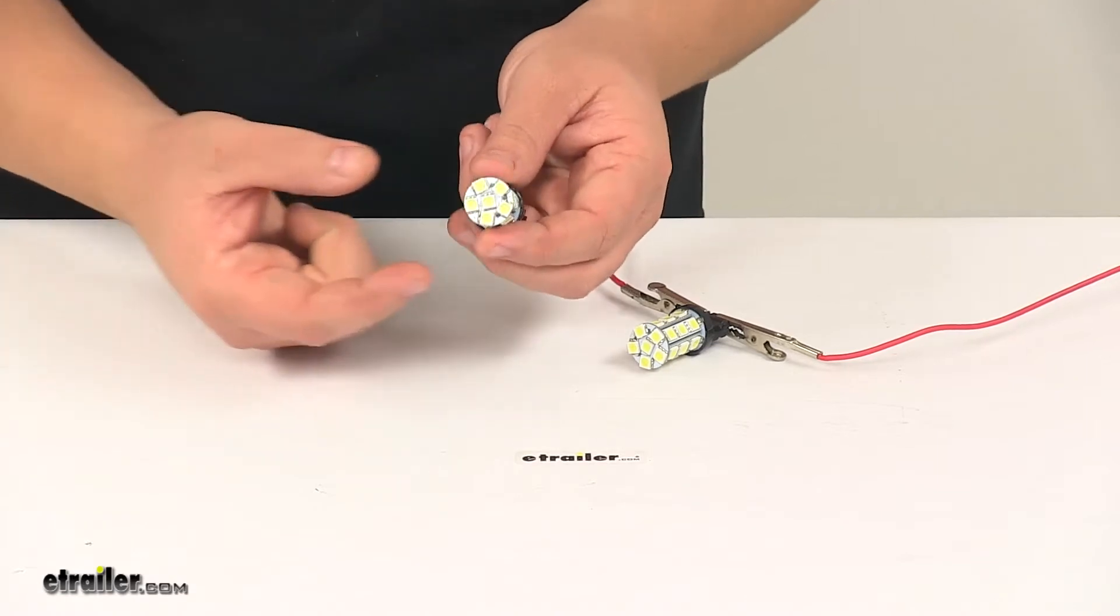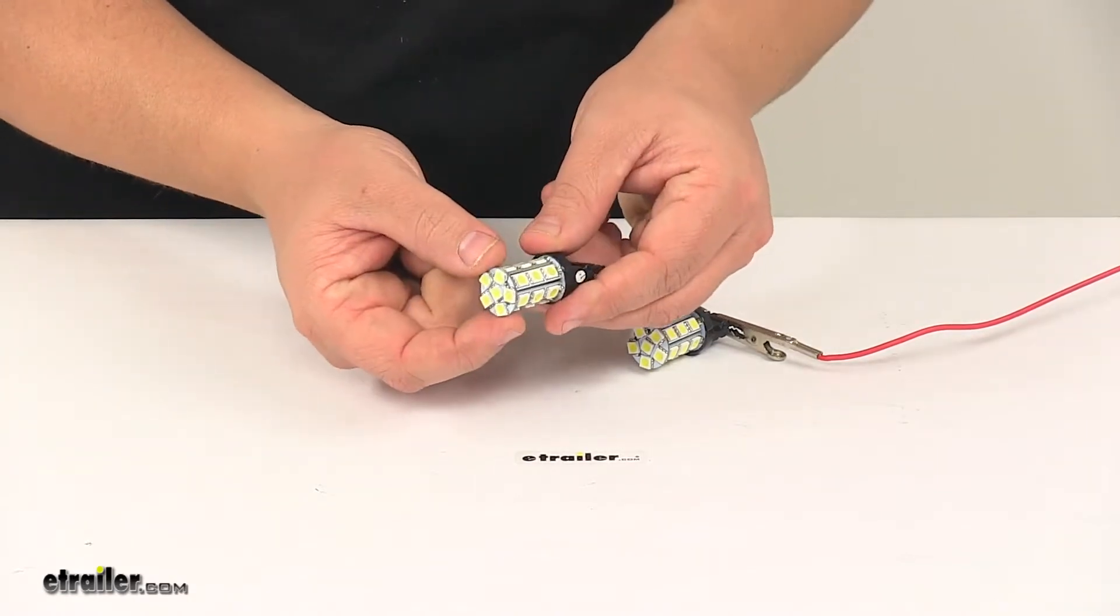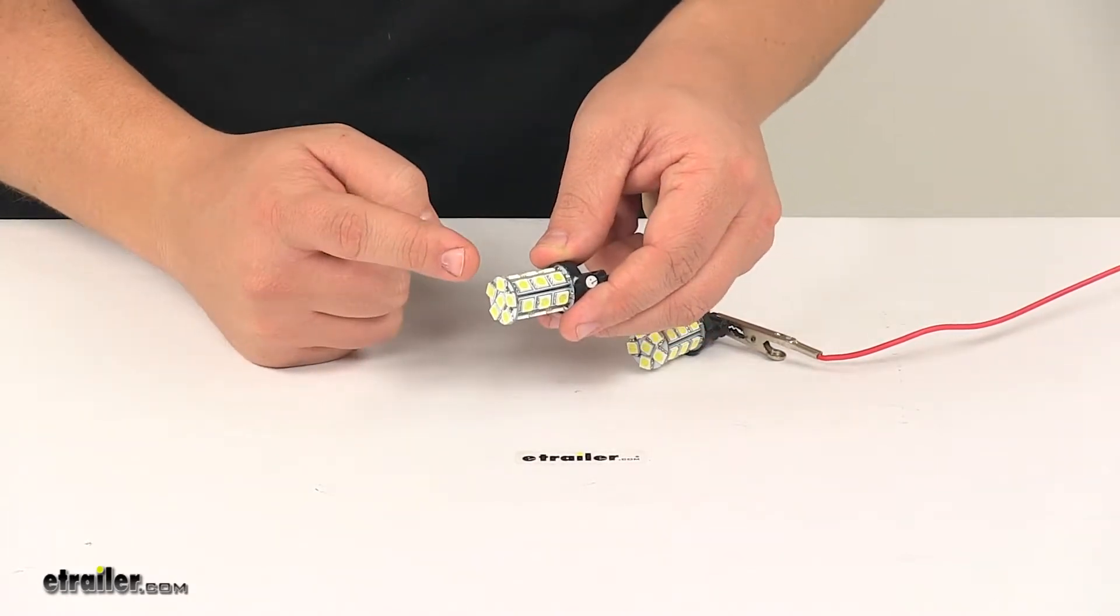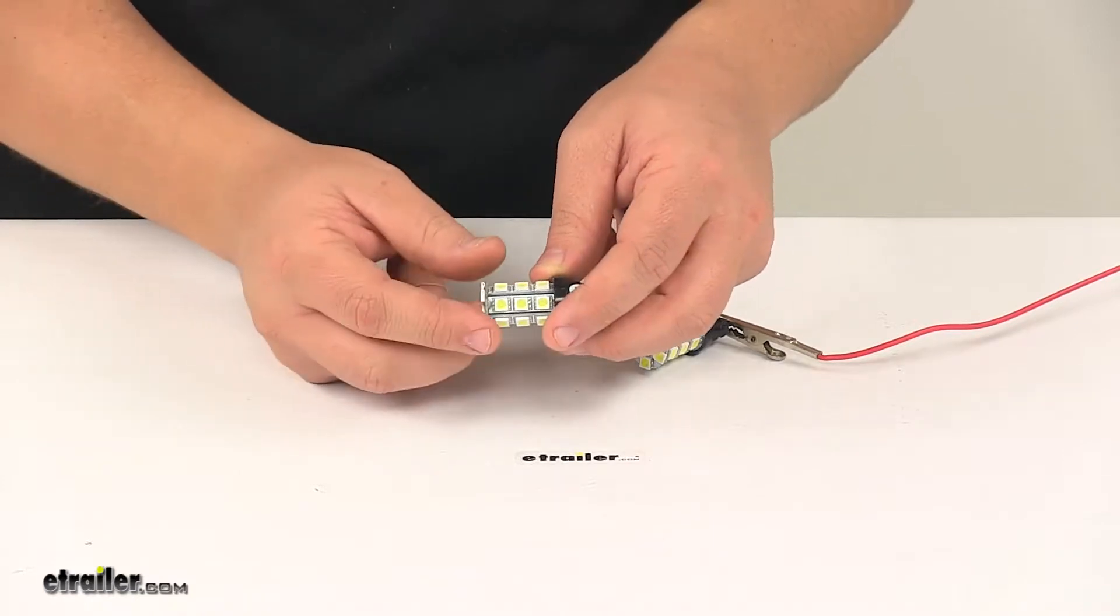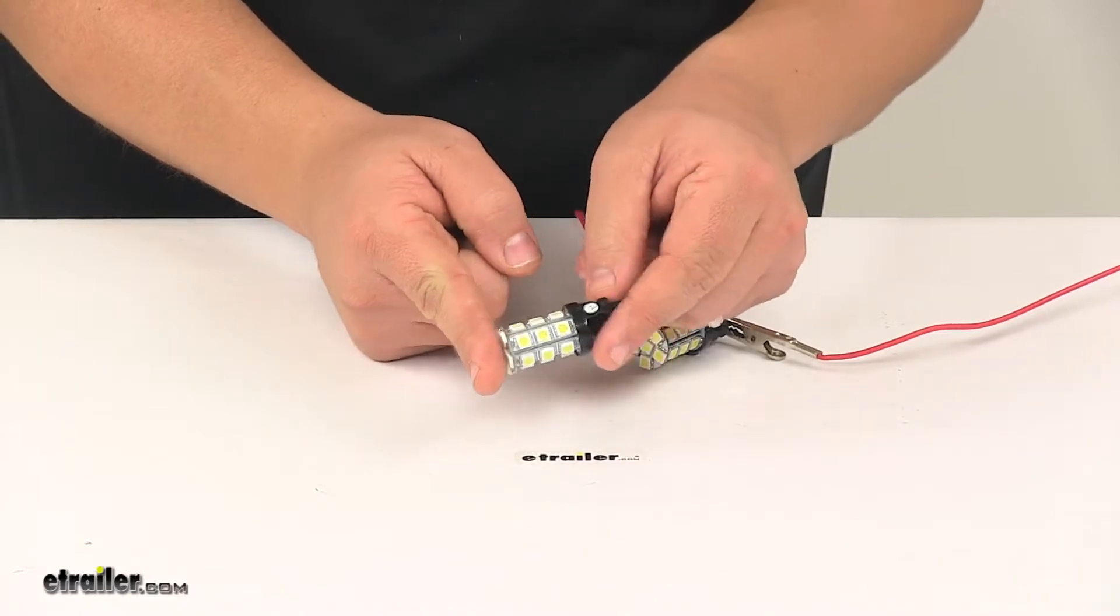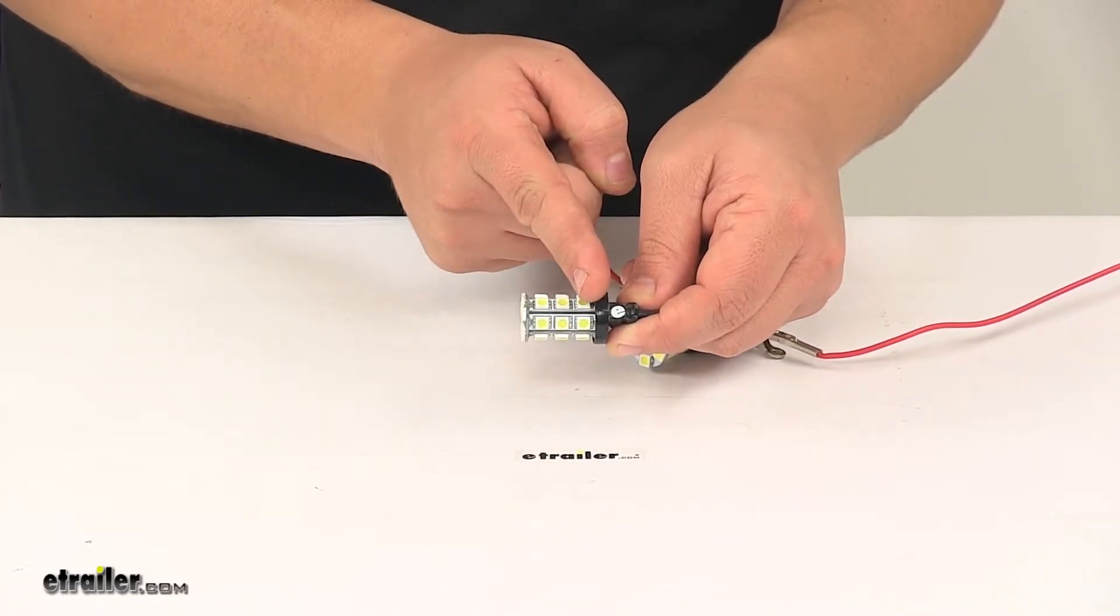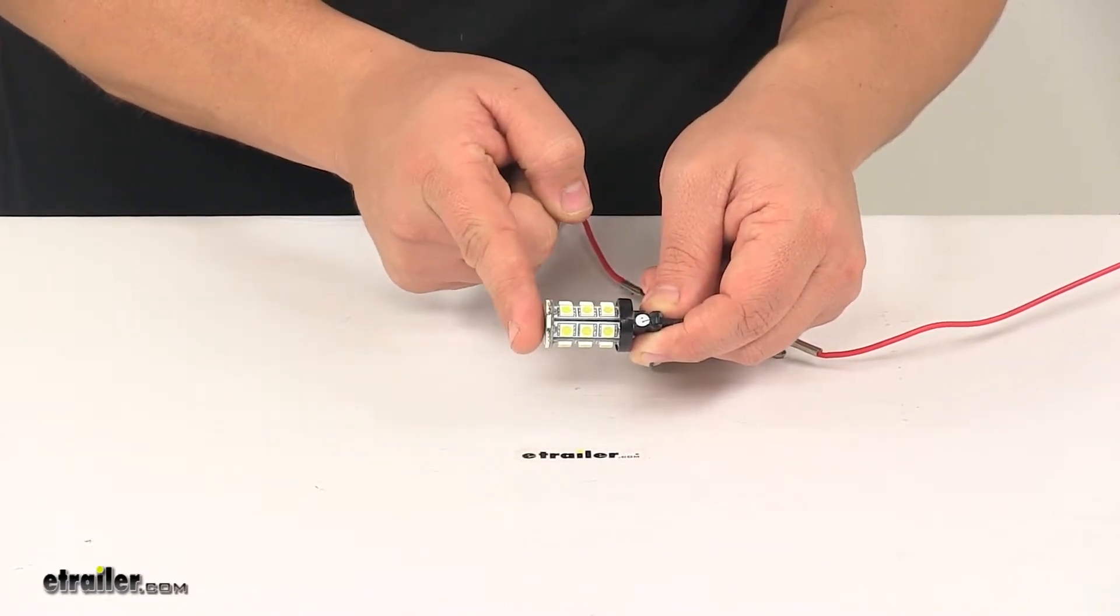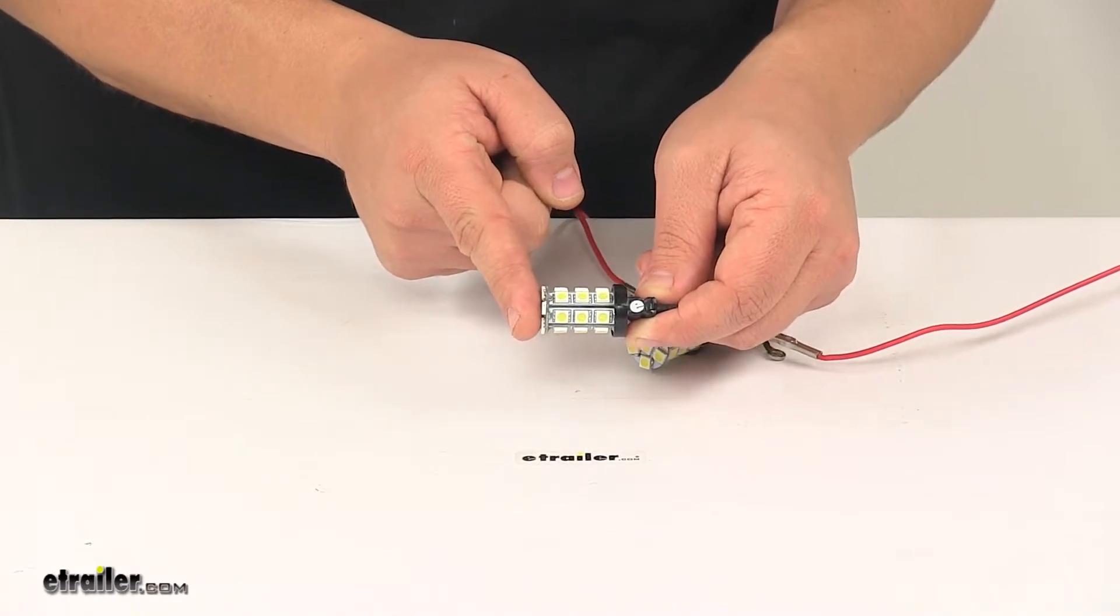When it comes to the dimensions, the actual bulb area where the LEDs are located measures three-quarter inches in diameter. The overall length, edge to edge, is about 2 and 1 sixteenth of an inch long, and measuring from the top of the base to the top of the LEDs is about 1 and 1 eighth of an inch long.